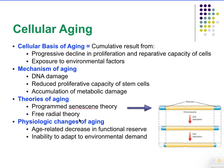We'll end with cellular aging. The cellular basis of aging suggests it is a cumulative result from progressive decline in the proliferative and reparative capacity of cells — cells become unable to continue repairing and proliferating in response to constant damage, such as from environmental factors. Mechanisms of aging include DNA damage, reduced proliferative capacity of stem cells, and accumulation of metabolic damage.